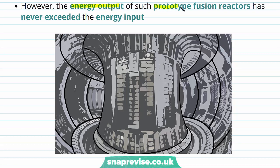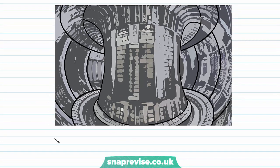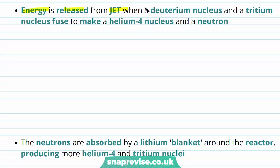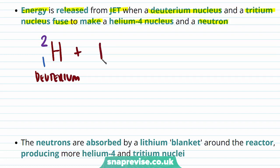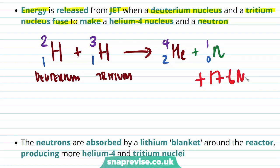However, the energy output of such prototype fusion reactors has never exceeded the energy input, so it is not yet energetically favourable to produce electricity this way. Energy is released from the JET when a deuterium nucleus and a tritium nucleus fuse to make a helium-4 nucleus and a neutron. Deuterium has two nucleons and one proton; tritium is another isotope of hydrogen with three nucleons and one proton. This process releases around 17.6 mega electron volts of energy.